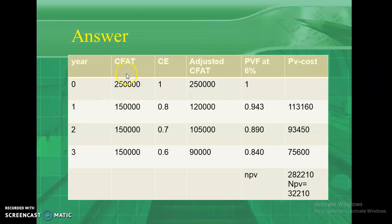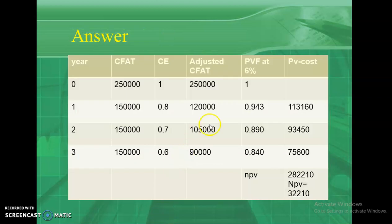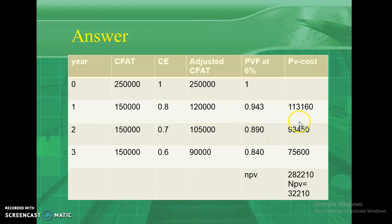Next, calculate the adjusted cash flow after tax by multiplying the cash flow after tax with the certainty equivalent. For year 1: 1,50,000 multiplied by 0.8 gives 1,20,000. The present value factor is calculated at the risk-free rate of 6%. At 6%, year 1 PV factor is 0.943. Multiply 1,20,000 by 0.943 to get the present value. For year 2, the certainty equivalent is 0.7 and the PV factor at 6% is 0.890, giving the adjusted present value of cash inflows.